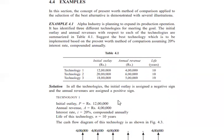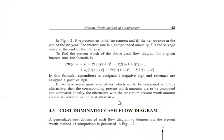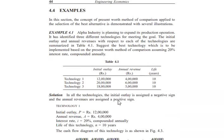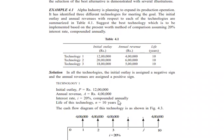Now let's move on to an example. Alpha Industry is planning to expand its production operation. It has identified three different technologies for meeting the goal. The initial outlay and annual revenues for each technology are summarized in a table. The task is to suggest the best technology based on the present worth method, assuming a 20% interest rate compounded annually.